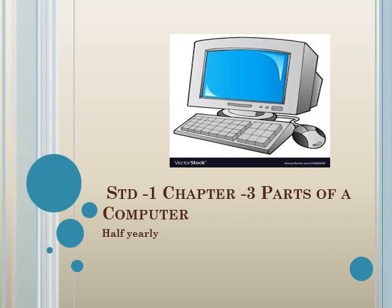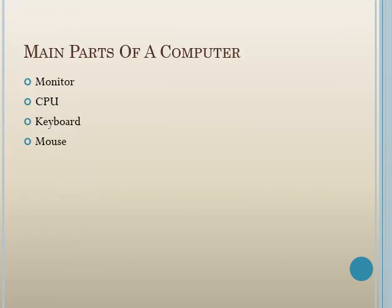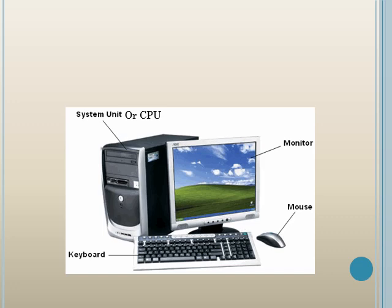Hello students of standard one, welcome to our next chapter — chapter 3: Parts of a Computer. In the previous chapter we learned about computers, and in this chapter we will learn about the various parts of a computer. A computer contains four main parts that we will learn about: monitor, CPU, keyboard, and mouse.